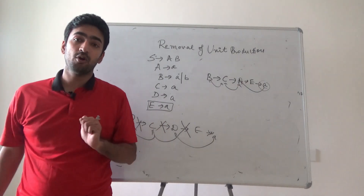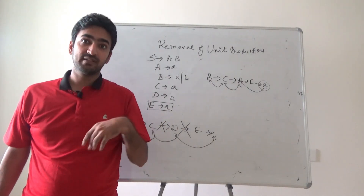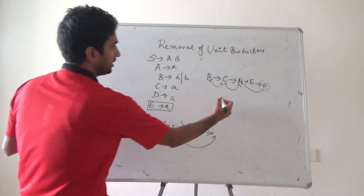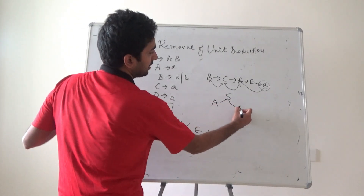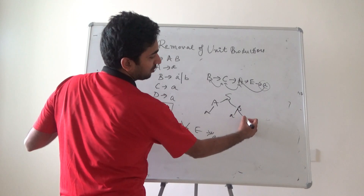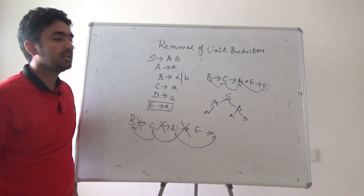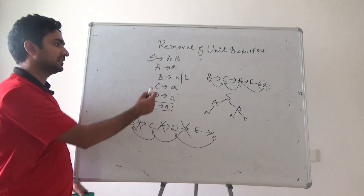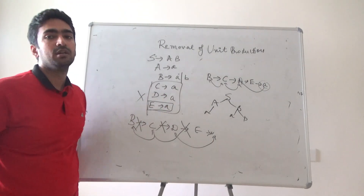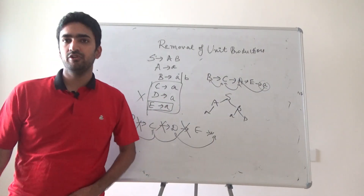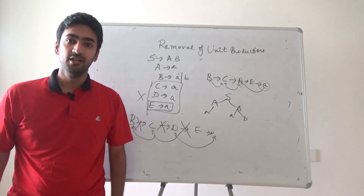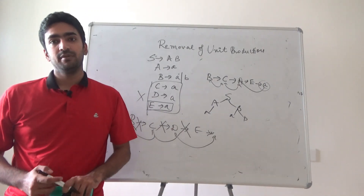If there are unreachable rules to be removed: S is generating AB, A is generating a, B is generating either a or b — which is the same thing. So C, V, and E are unreachable and can be removed. This is how unit production is eliminated. Share and subscribe this content — thank you very much.